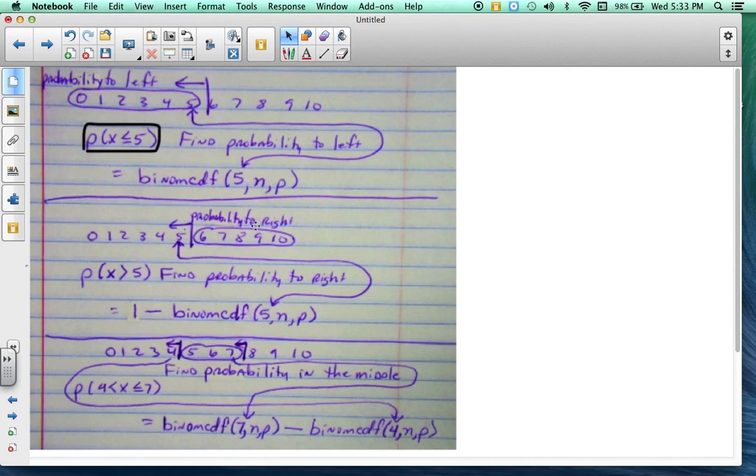Now, if we want to find the probability right, in other words, the x is, probably the x is greater than 5. Well, I circled 6 through 10. That means I need to find 1 minus, because I'm looking for the probability to the right, 1 minus binomial CDF, and that's 5NP. So whatever NP is, you just fill in. But I use this 5, the number to the left.